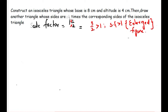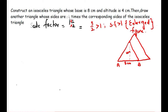Let us draw the rough diagram. Suppose this is the actual triangle with base 8 centimeters and altitude 4 centimeters. The similar triangle will be larger than the actual triangle. If this is B, the vertex will be B dash, and this is C, the vertex over here will be C dash. When we had to draw a diminished figure, B dash and C dash came inside the actual triangle. In case of an enlarged figure, B dash and C dash will come outside the triangle.